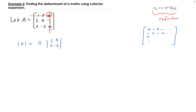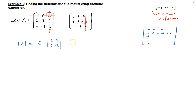Let me rewrite the matrix: 1, 5, 0 / 2, 4, −1 / 0, −2, 0. Going to the next entry, I'm going to cover up the second row and third column. For the sign, that position is minus, so we get minus times negative one, times the determinant of the submatrix: 1, 5, 0, −2. That submatrix comes from covering the second row and third column.